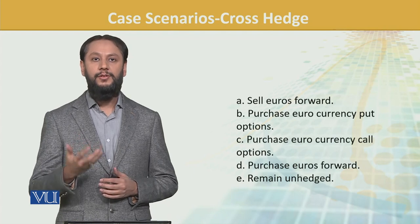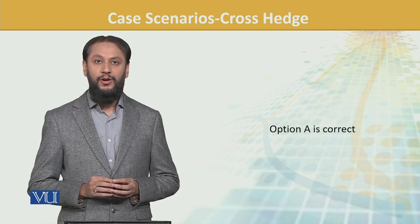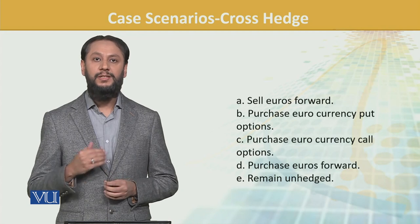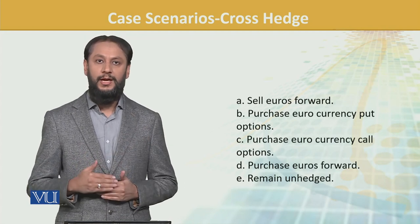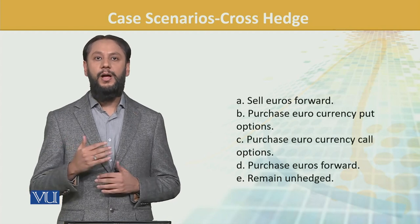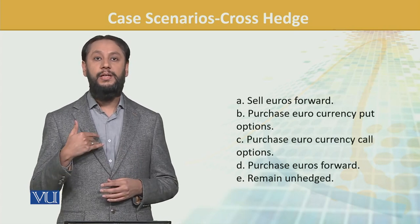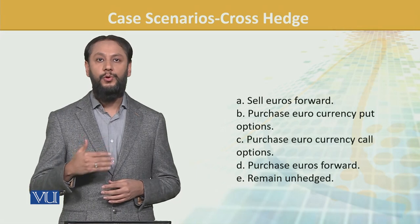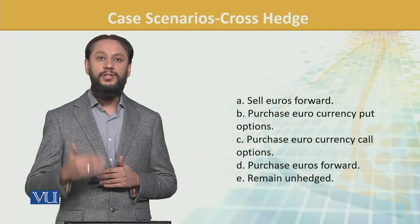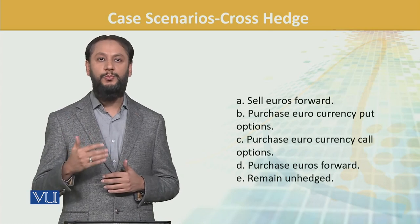The correct answer is Option A — sell euro forwards. Because you are going to receive euros in the future, you take a sell position in the forward market, which allows you to lock in the rate and safeguard your position. If in case the euro forward contract were not available, then under cross hedging you would need to look for an alternate instrument. You should clearly understand which position to take in which situation.